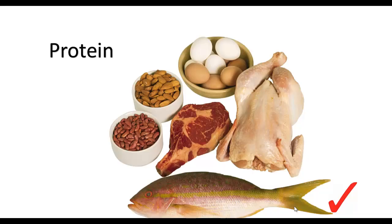Protein. We usually associate protein with muscle building and creation, and there's a lot of truth to that. Proteins are nutrients that provide the building blocks for your body to grow and for tissue repair. Normally we get proteins from meats, but we can also get them from beans and nuts. Protein is associated with cell building and tissue repair, which is why a lot of people who are exercising or weightlifting will have a protein shake.